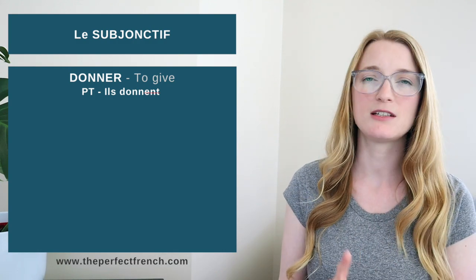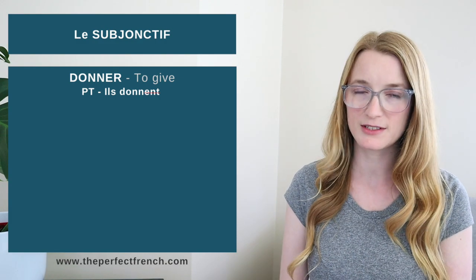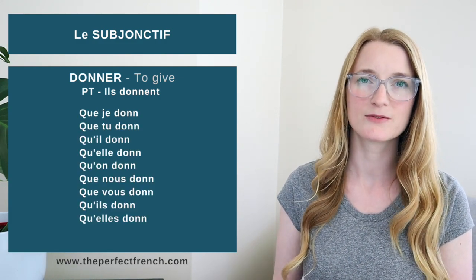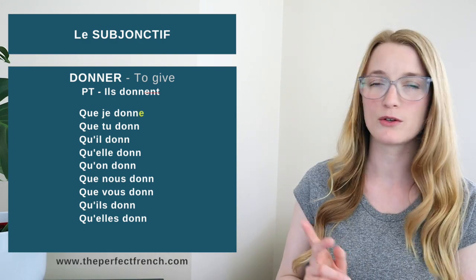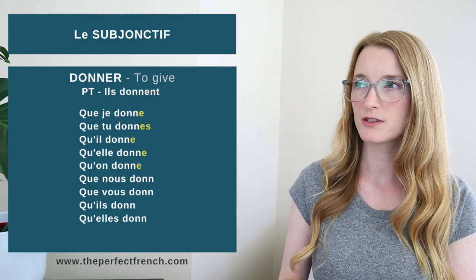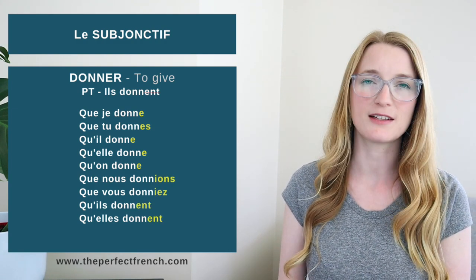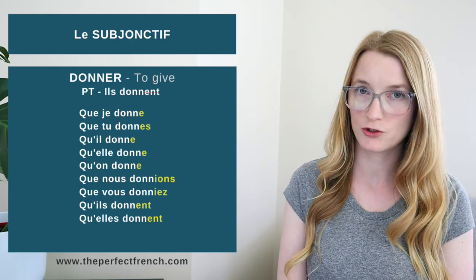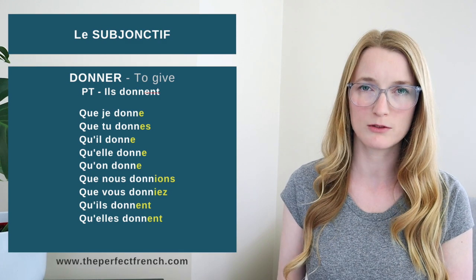So in the present tense we have ils donnent. We remove the -ent. We keep d-o-n-n. Then we are going to add the endings. The endings are -e, -es, -e, -ions, -iez, -ent, -ent. So they are fairly easy, they don't change too much, and they are going to be the same for all the regular ones — because of course we have irregular ones.